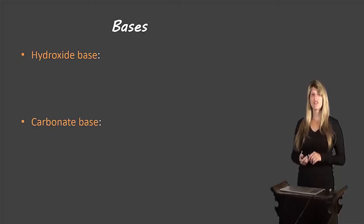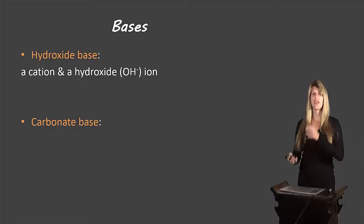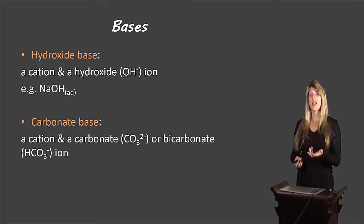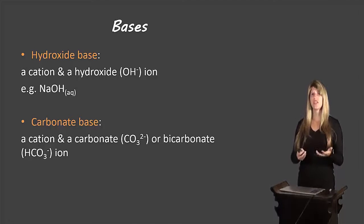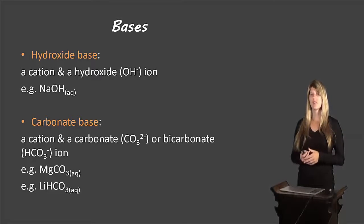We have two different types of bases: hydroxide bases and carbonate bases. Hydroxide bases are made up of a cation and then a hydroxide ion — remember from our polyatomics list that hydroxide is OH⁻. Carbonate bases are made out of a cation and either a carbonate (CO₃²⁻) anion, or a hydrogen carbonate or bicarbonate anion (HCO₃⁻). Those are all the different types of bases.